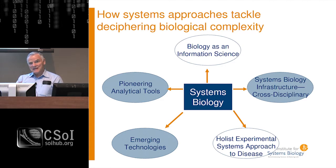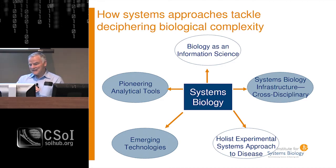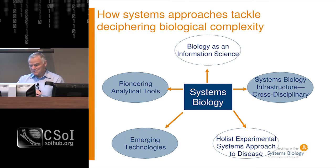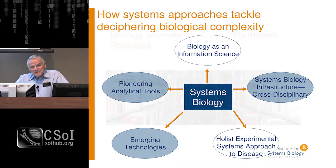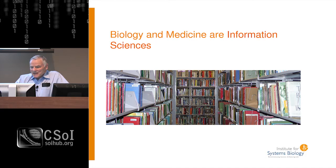Systems medicine and P4 medicine allow us to approach complexity in a variety of ways. I'm going to talk about five things: biology as an information science, the powerful cross-disciplinary infrastructures it has created, the experimental approach to systems disease that captures dynamics, the development of new technologies, and the pioneering of new analytic tools. So how is medicine actually an information science? I'll give you some of the basic algorithms by which I think about this.